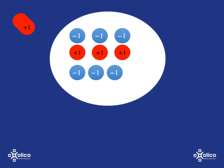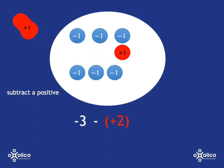Similarly, we start again at negative three. This time we want to take away positive two, so we're subtracting a positive — taking out two of those hot disks, removing some heat. If we're taking out some heat, the temperature is going to go down. So we simply go down — subtracting — and we get an answer of negative five.